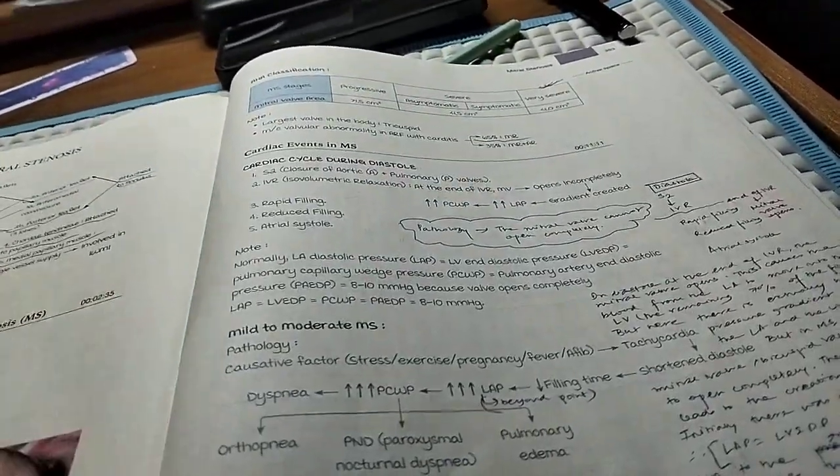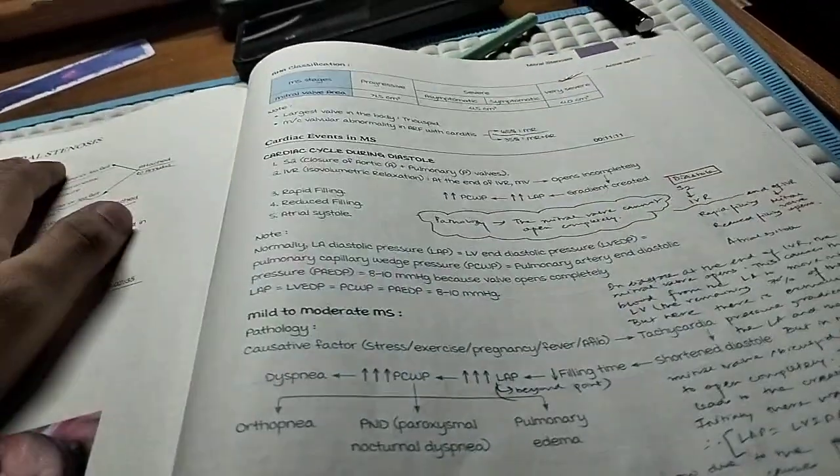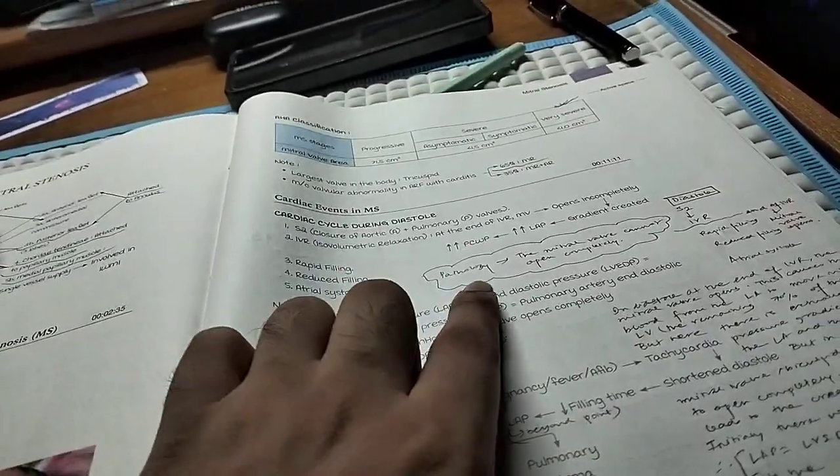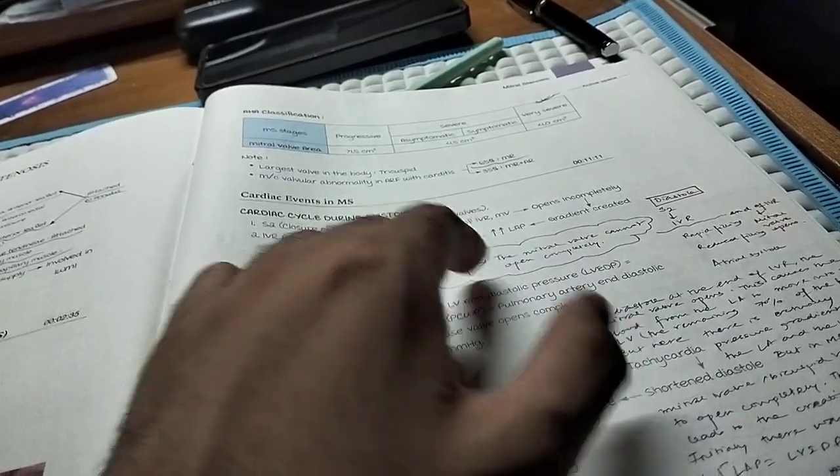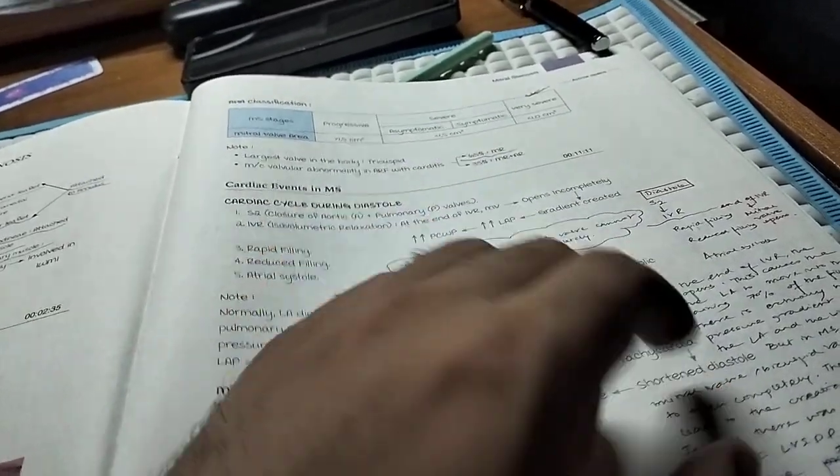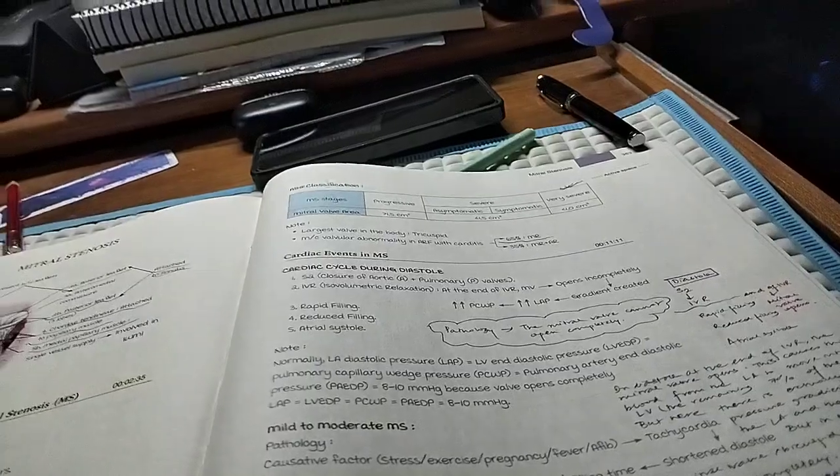So this is how I actually write down the pathology of any event. Like I'm telling you, I was doing the mitral stenosis part, so for the pathology of mitral stenosis, this is a one-line pathology for the entire paragraph. Like here, the mitral valve cannot open completely, and this is the entire explanation for the mitral valve non-competence.